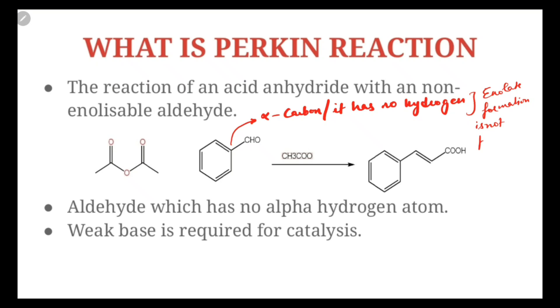So once enolate formation is not possible, that means we cannot form enolate from this aldehyde. Let's take an example, acetaldehyde. This aldehyde now has alpha hydrogen, so this aldehyde can be converted into an enolate. In this case, benzaldehyde has no alpha hydrogen, so benzaldehyde cannot be converted into enolate.